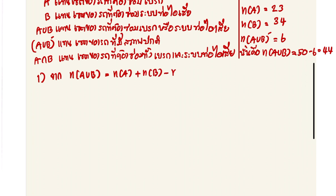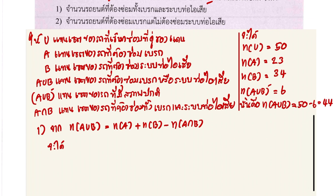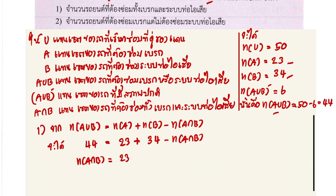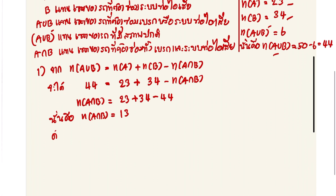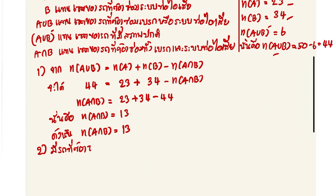ข้อที่หนึ่ง จากสูตร N(A Union B) เท่ากับ N(A) บวก N(B) ลบ N(A Intersect B) แทนค่าได้ว่า 44 เท่ากับ 23 บวก 34 ลบ N(A Intersect B) ดังนั้น N(A Intersect B) เท่ากับ 23 บวก 34 ลบ 44 เท่ากับ 13